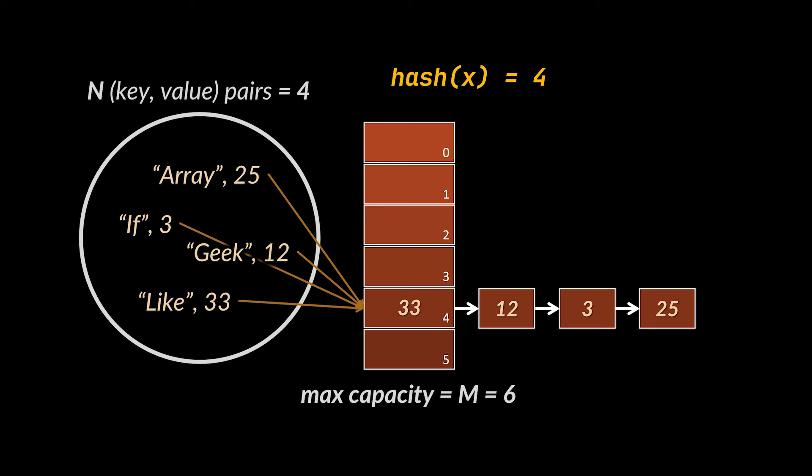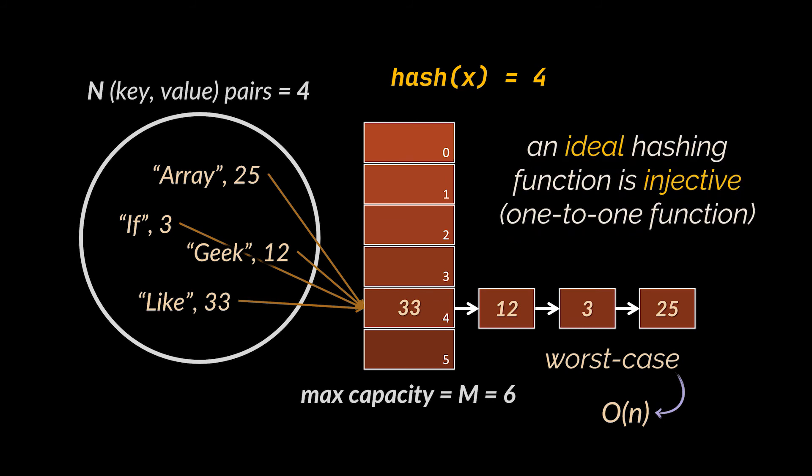When we need to retrieve a specific value we will have to go through all the items in the linked list and perform a search by value. We just transformed our potential O(1) complexity into an O(n) time complexity. In such rare cases we have what we call a worst case scenario. This stresses the importance of our hashing function and the fact that the more injective this function is, the better.